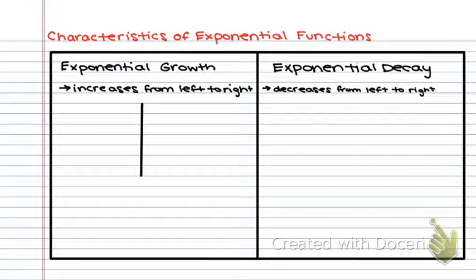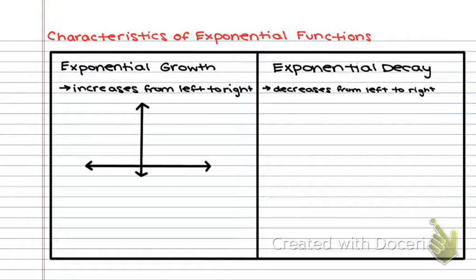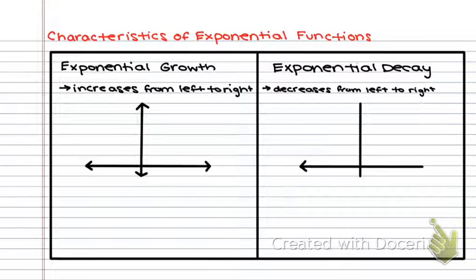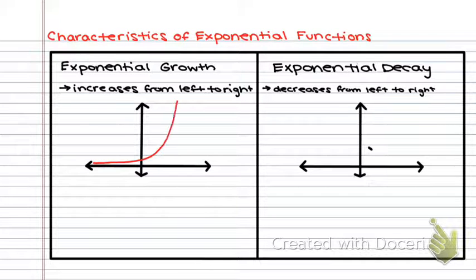Let's take a look at what the graph actually looks like. I'm going to draw only the top two quadrants when creating my graph, and you'll see why in a second. We're going to do that for both exponential growth and exponential decay. An exponential growth graph will look something like this, and an exponential decay graph will look something like this.